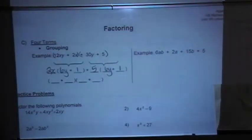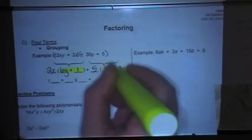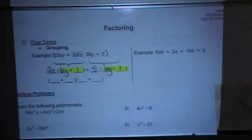Okay, well, notice these two binomials are the same, 6y plus 1. They should be. If they are not, then either you have done something wrong when factoring out your GCF, or it's a non-factorable polynomial.